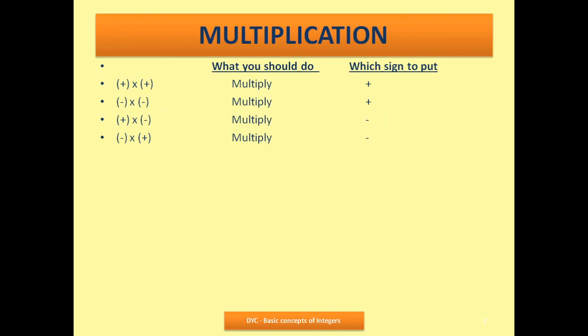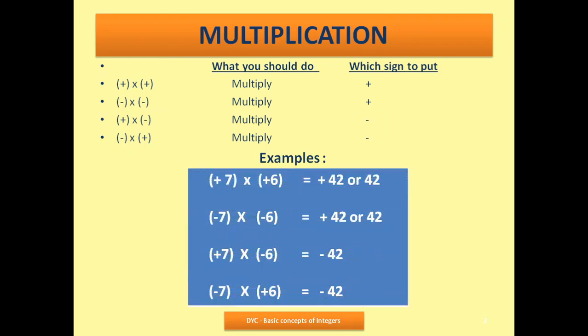When one is plus and one is minus, we multiply but the sign will be negative. Let us understand with examples using the same numbers 7 and 6 but with different signs. In the first case, plus 7 and plus 6: 7 times 6 is 42. When both signs are plus, there is no danger — simply write 42 or plus 42.